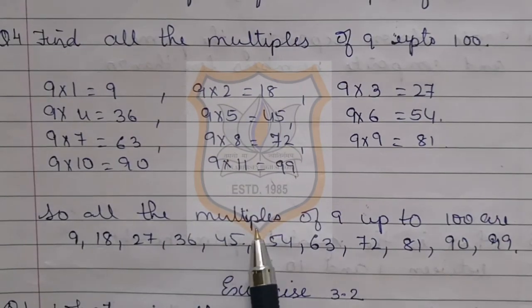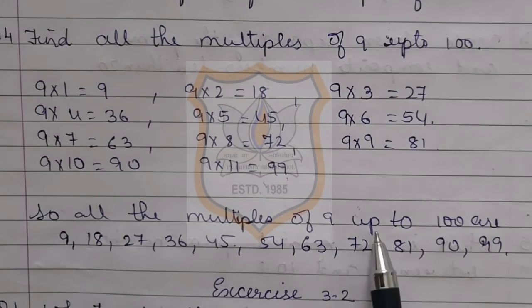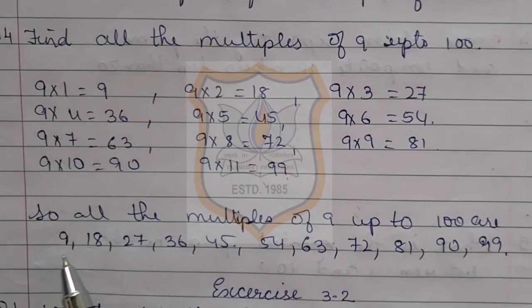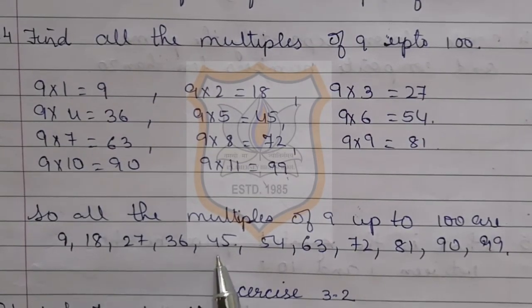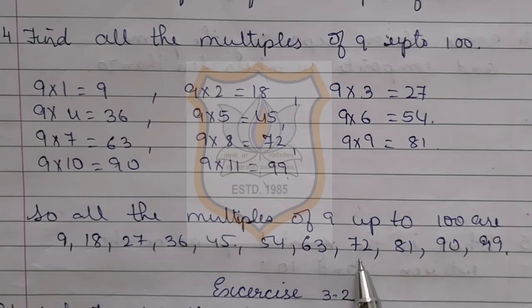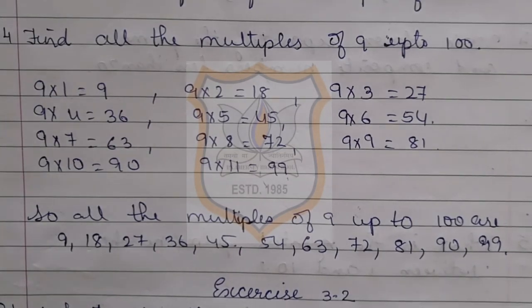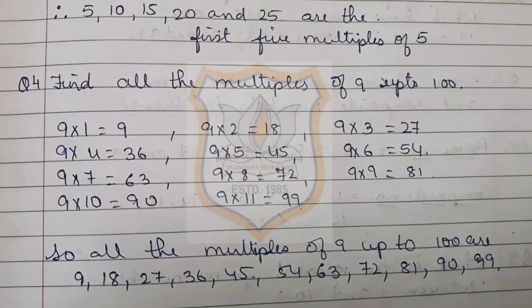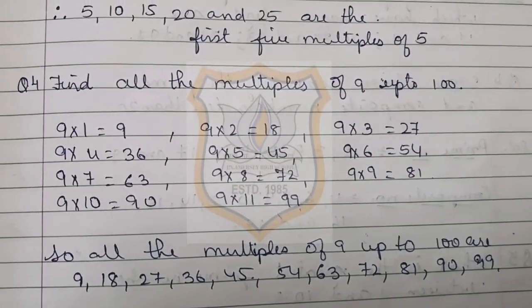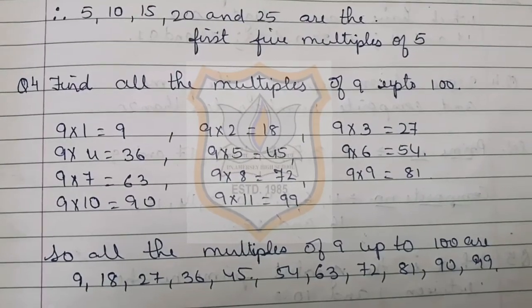All the multiples of 9 up to 100 are: 9, 18, 27, 36, 45, 54, 63, 72, 81, 90, and 99. With this, we end today's video and will continue with our chapter in the next video. Thank you.